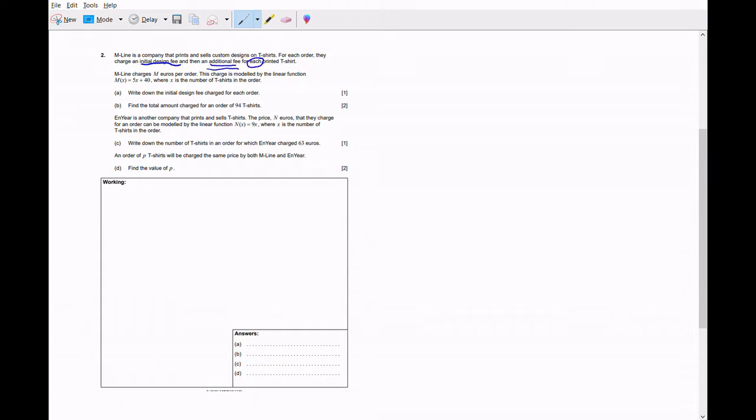So there's gonna be two fees in the function. They give us that M line charges m euros per order. This charge is modeled by a linear function where x is the number of t-shirts in the order.